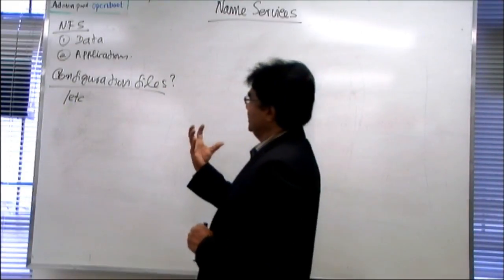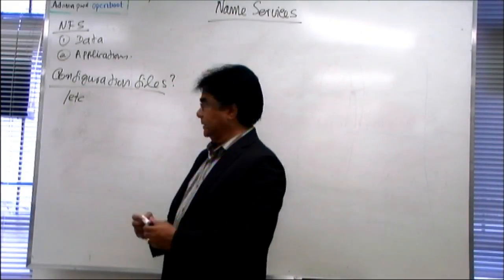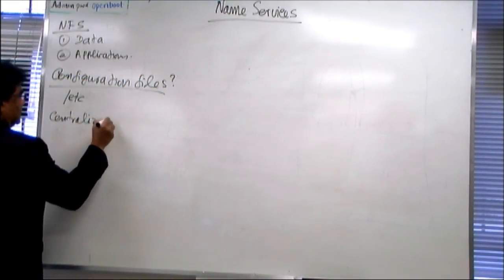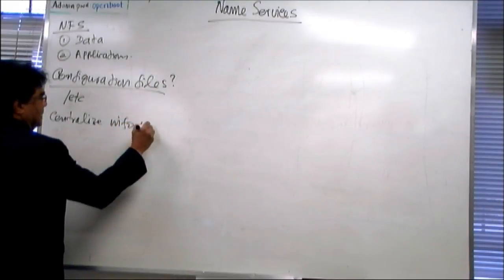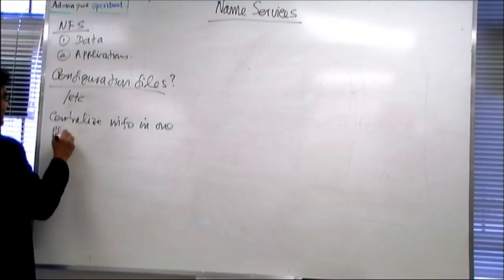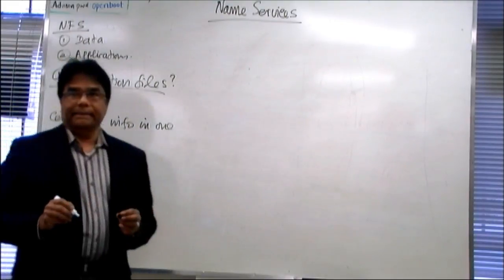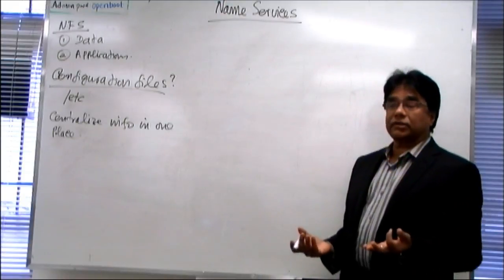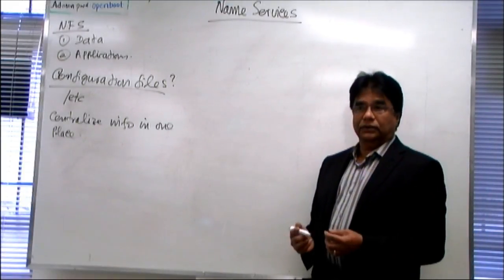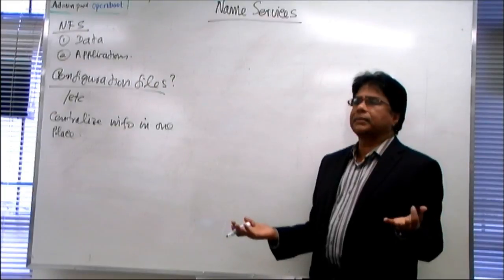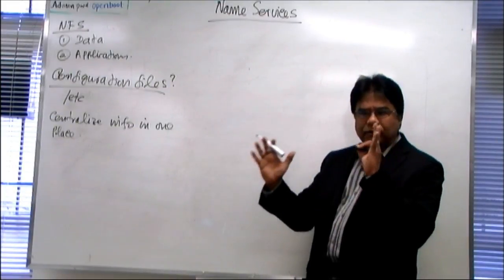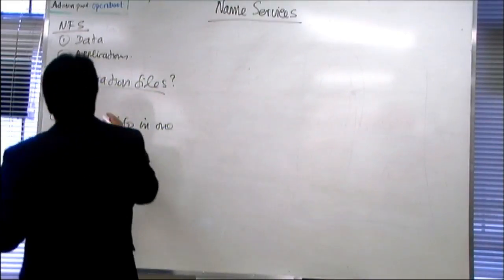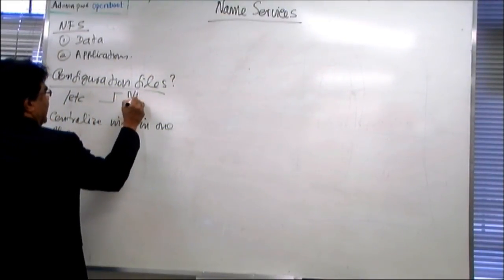So the information, centralizing the information, that's what we want to do. Centralize info in one place. That is our concern. We can be talking about ETC files or maybe email addresses of people, all the people, or maybe some other things also. It doesn't have to be strictly ETC. When ETC is concerned, to centralize that, we use two types of name services. One is called NIS, other one is NIS Plus.